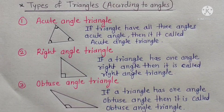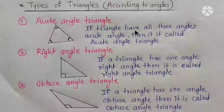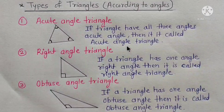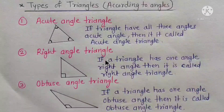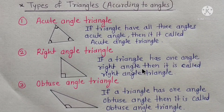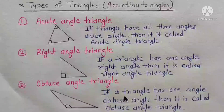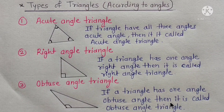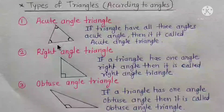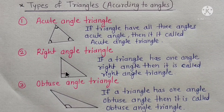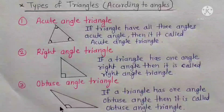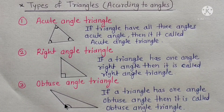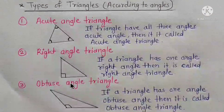Types of triangles according to angles: The first type is an acute angle triangle — if a triangle has all 3 angles acute, it is called an acute angle triangle. The second type is a right angle triangle — if a triangle has one angle equal to 90 degrees, it is called a right angle triangle. The third type is an obtuse angle triangle — if a triangle has one angle above 90 degrees, it is called an obtuse angle triangle.